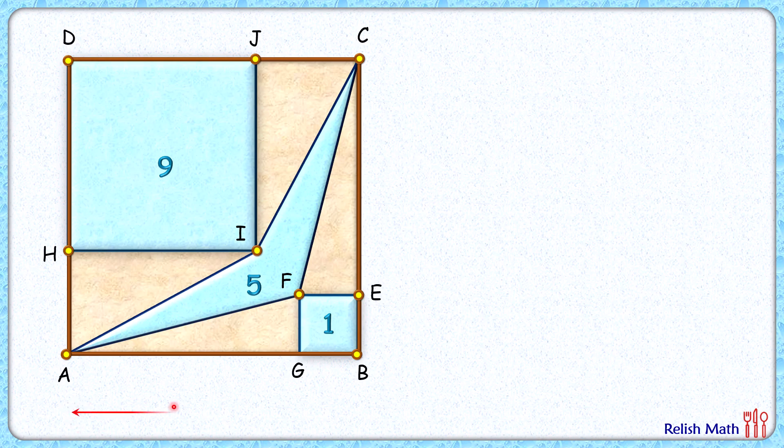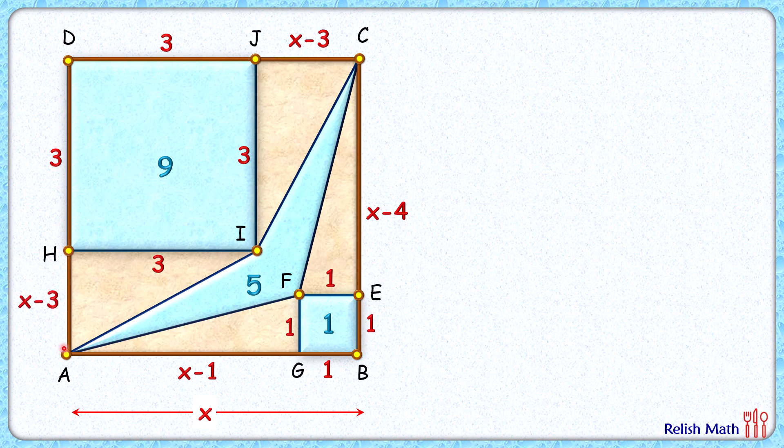Let's start by assuming the side length of the brown square is x centimeters. For this blue square, area is 9 and the side length will be 3 centimeters. This blue square area is 1, so side length will be 1 centimeter. Now AG length will be x minus 1, CE length will be x minus 1, JC length will be x minus 3, and HA will also be x minus 3.